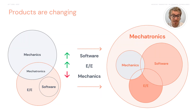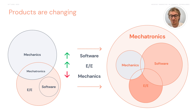The products are changing. Before, mechanics and E/E architecture played a much bigger role than the software elements. But now the importance of software is growing, the complexity is growing, and it's much harder to integrate into the system.